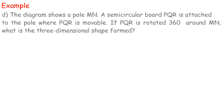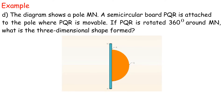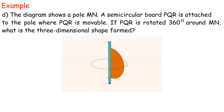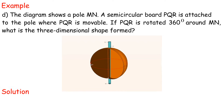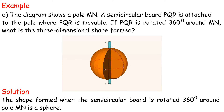Example D: the diagram shows a pole MN. A semicircular board PQR is attached to the pole where PQR is movable. If PQR is rotated 360 degrees around MN, what is the three-dimensional shape formed? Solution: the shape formed when the semicircular board is rotated 360 degrees around pole MN is a sphere.